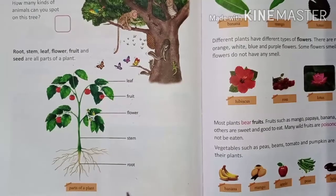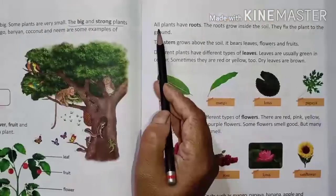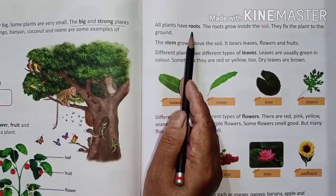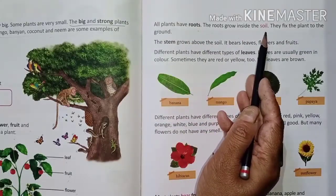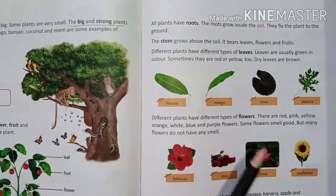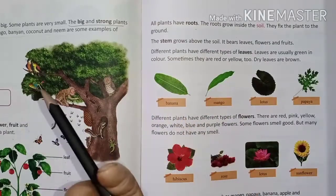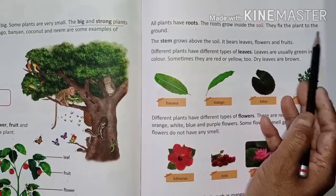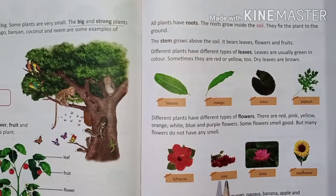This is an important part of trees. All plants have roots. The roots grow inside the soil — roots go inside the soil and then the plant grows. They fix the plant to the ground.